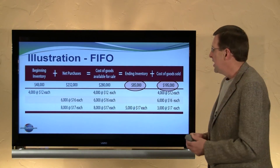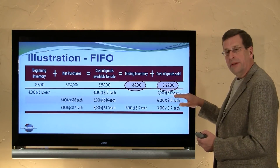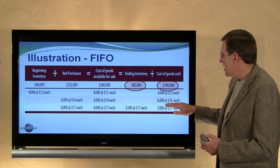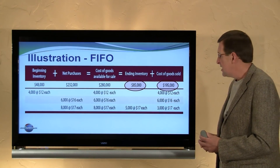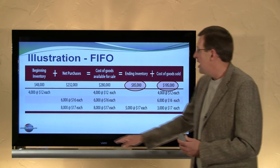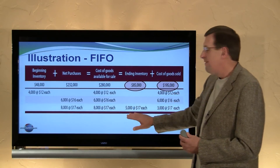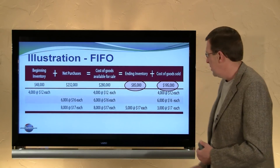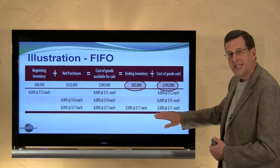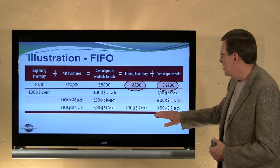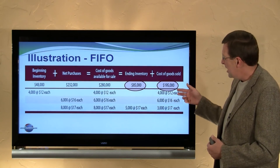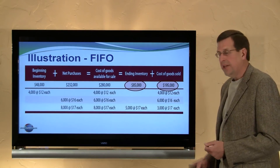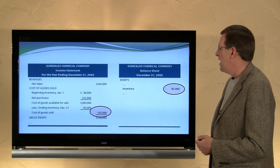First in, first out — the first layer, 4,000 units at $12, is assumed to be sold. Of the next layer of 6,000 units, all 6,000 are assumed to be sold at a unit cost of $16. Of our last layer of purchases of 8,000 units, 5,000 of that is our ending inventory — remember, by physical count we determined we had 5,000 units. The other 3,000 at $17 per unit is assigned to cost of goods sold. So we sold 4,000, 6,000, and 3,000 units at $12, $16, and $17 respectively, leaving 5,000 units at $17 as our ending inventory.